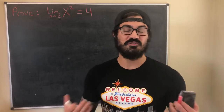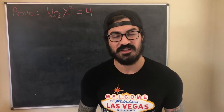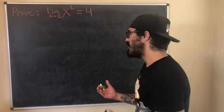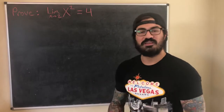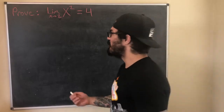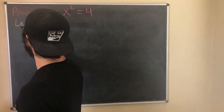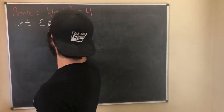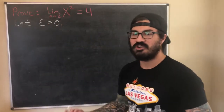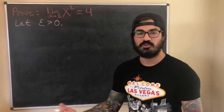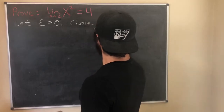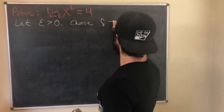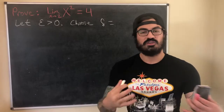I'll link that above, and if you don't know the definition of the limit or don't really understand it, I'll link another video where I introduce that definition as well. Using the definition of the limit, we start by letting epsilon be greater than zero, because our definition tells us that for each epsilon greater than zero there exists a delta. So since it's for each epsilon greater than zero, we have to let epsilon be an arbitrary real number greater than zero, but we get to choose delta.